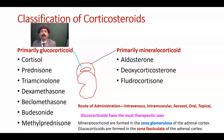We have two types of steroids: the glucocorticoids and mineralocorticoids. They are formed from the adrenal cortex.